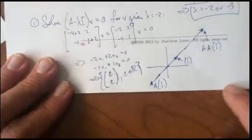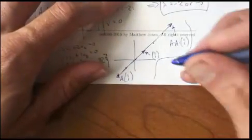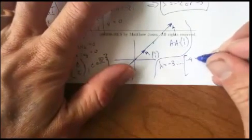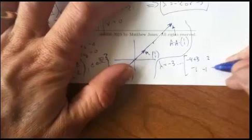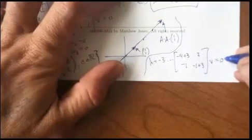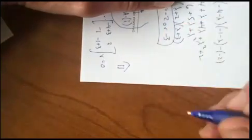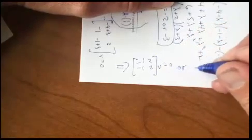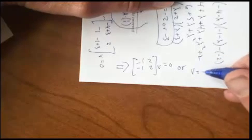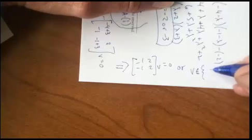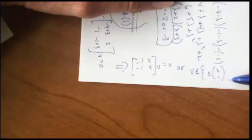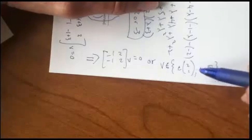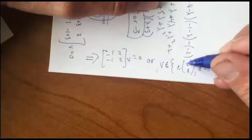What about the next eigenvector? I'm running out of room here, so I'll try to squeak this in down here in the corner. If lambda equals negative 3, in this case we get negative 4 minus negative 3 is negative 4 plus 3, I get negative 1 and 2 and then negative 1 minus negative 3 is negative 1 plus 3 times V equals 0. But that's the same thing as saying negative 1, negative 1, 2, 2 times some vector V equals 0, or V is something in the set of c times 2, 1 for c in the reals.